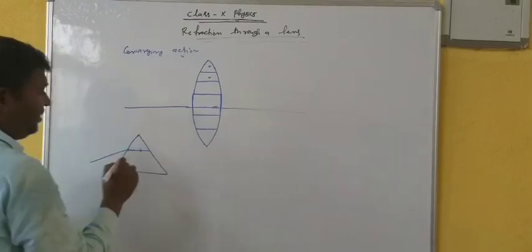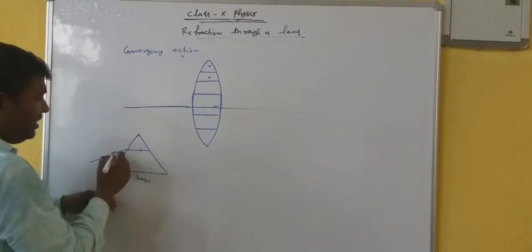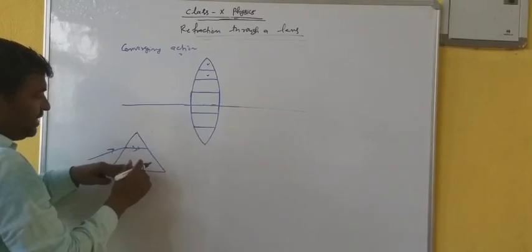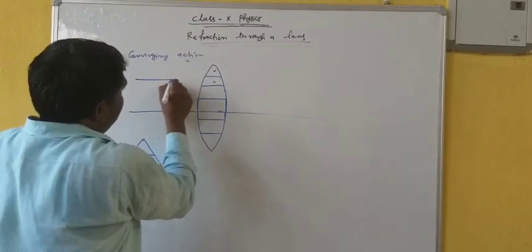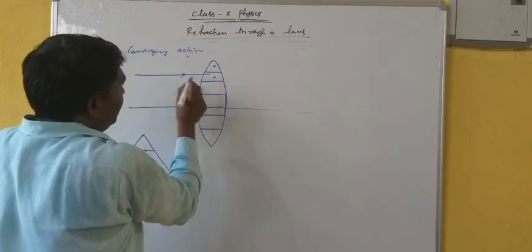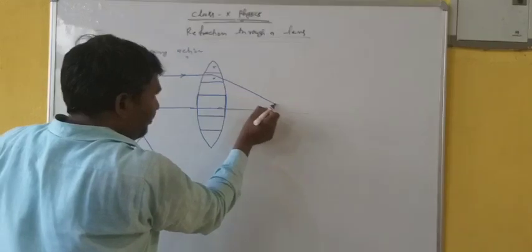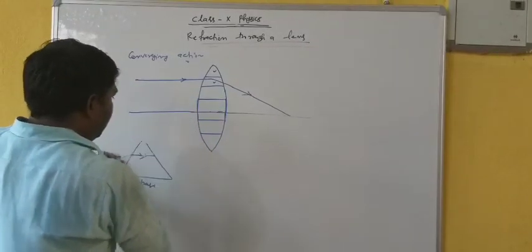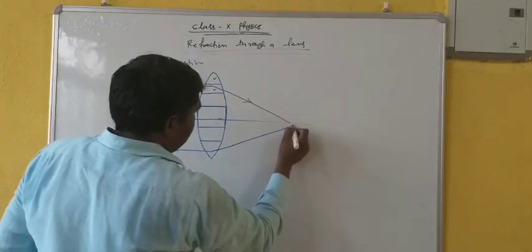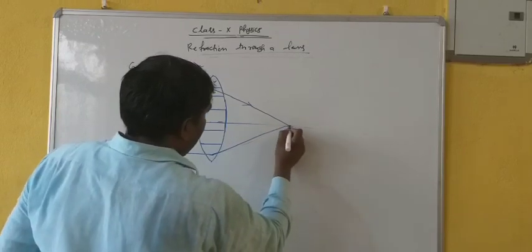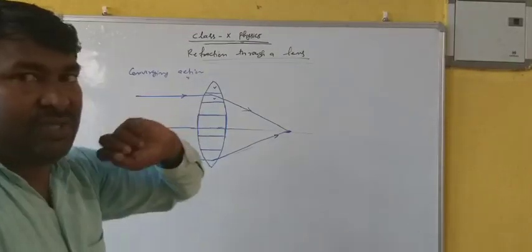In the refraction through a prism, the light ray after refraction is trying to bend towards the base. Since it is the base, the refracted ray is bending towards the base. That is why when the light ray is incident here, it will try to bend towards the base. Similarly here, if a light ray comes like this, it will bend towards this one — its nature is converging.